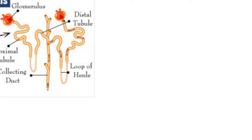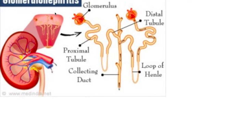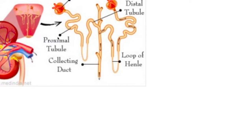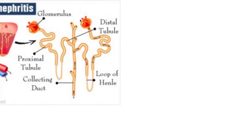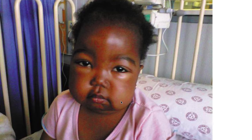Glomeruli are little tubules located in your kidneys that filter out your urine. There's a tiny filtration system within your kidneys, and if these become inflamed or infected it's called glomerulonephritis, and it affects the kidneys.